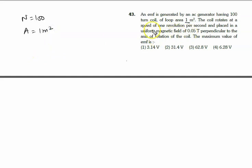The coil rotates at a speed of one revolution per second, giving a frequency of one hertz, and is placed in a uniform magnetic field of 0.05 tesla perpendicular to the axis of rotation of the coil. We need to find the maximum value of the EMF induced.